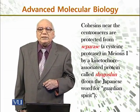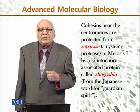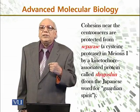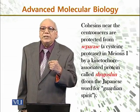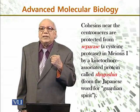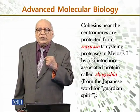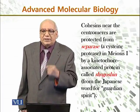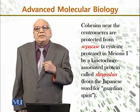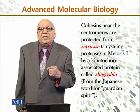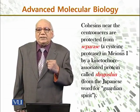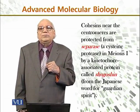Cohesion near the centromere is protected from separase, which is a cysteine protease, in meiosis I. It is protected by a kinetochore-associated protein called shugoshin, from the Japanese word for a guardian spirit, because this protein guards the cohesion from separase and does not allow it to be separated.